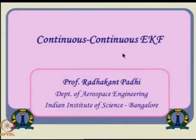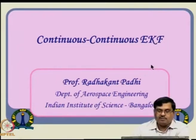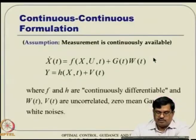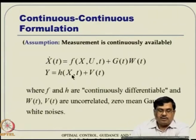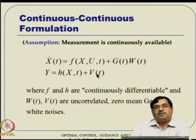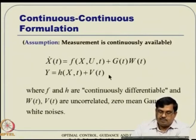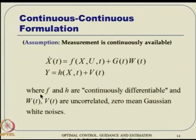With that in mind, we go to the EKF domain. First we see the continuous EKF where everything happens in the continuous domain. The problem is X-dot = F(X, u, t) + G(t) W(t) and Y = H(X, t) + V(t), with everything continuous including measurement. F and H are assumed to be continuously differentiable, and W and V are uncorrelated zero-mean Gaussian white noise.